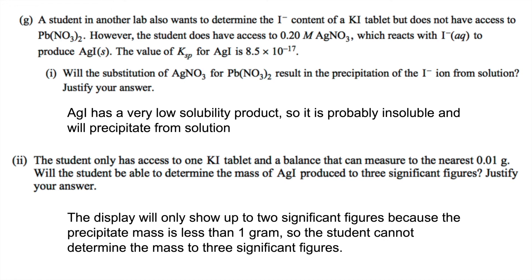G part one is asking if this substitution will still result in the precipitation of the iodide ion. Most likely it will because the value of Ksp for silver iodide is really low. And as long as the reaction quotient is greater than Ksp, the precipitate is still going to form.